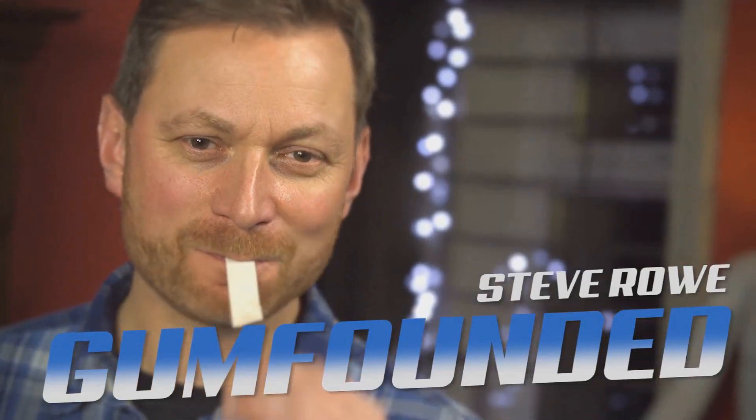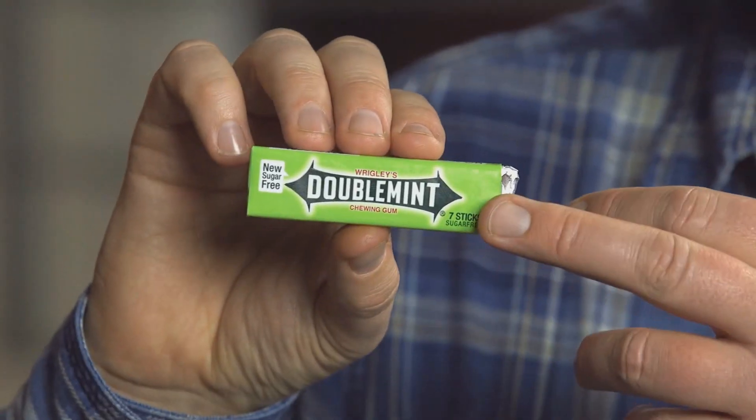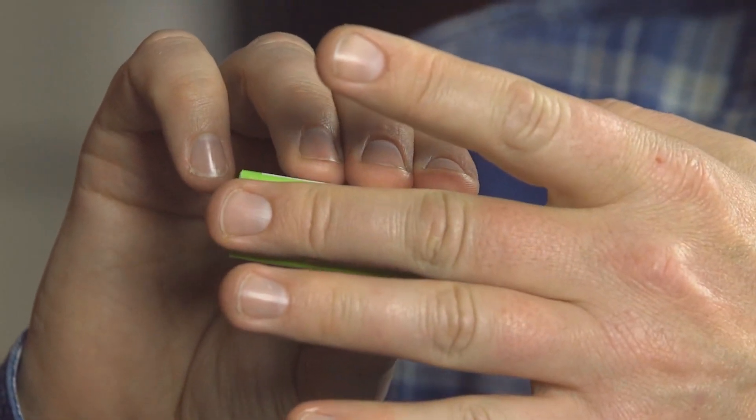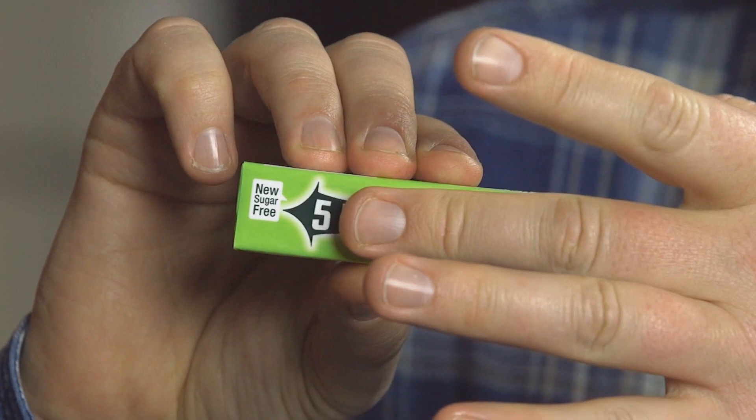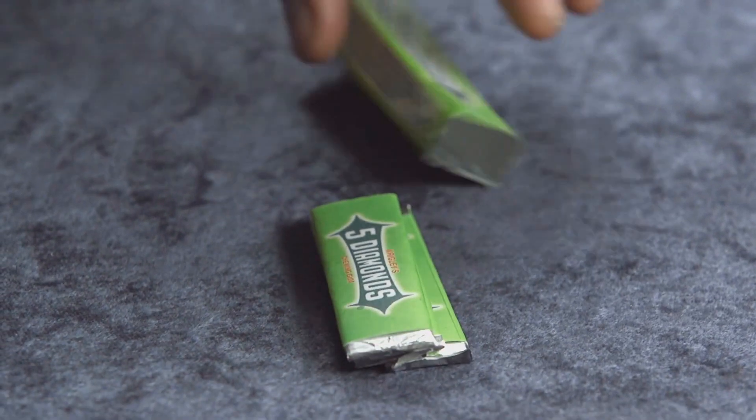Today we're going to look at Gum Founded from Steve Rowe and Big Blind Media. Gum Founded is a three-stage card reveal. So beyond just showing a joker graphic holding the person's card, there's actually three steps to this, each one elevating on the previous.